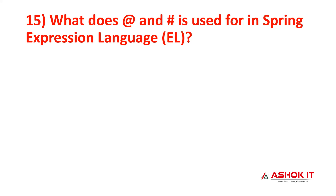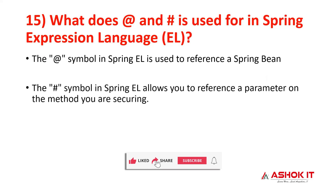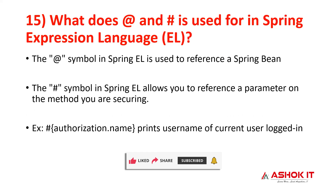Question fourteen: what do the @ symbol and # symbol mean in Spring Expression Language? The @ symbol is used to refer to a Spring bean from the Spring container. The # symbol is used to refer to a parameter of a method. For example, #authorization.name refers to the authorization object passed as a parameter, used to print the current user. Authorization is a subtype of the Principal interface.